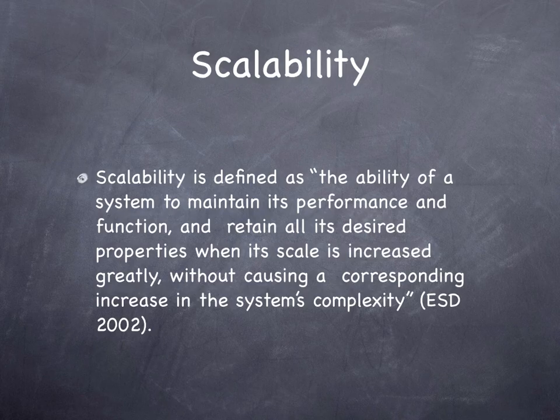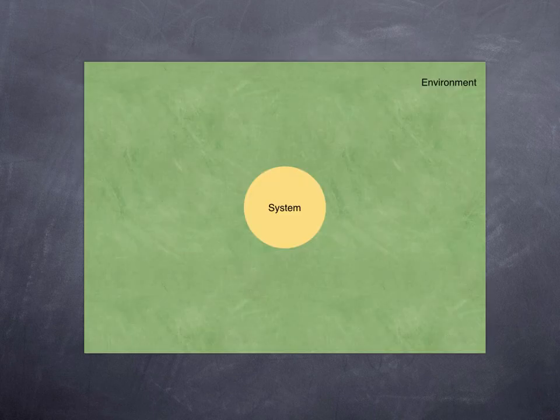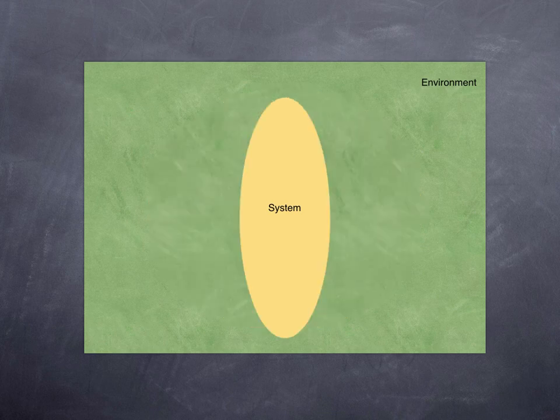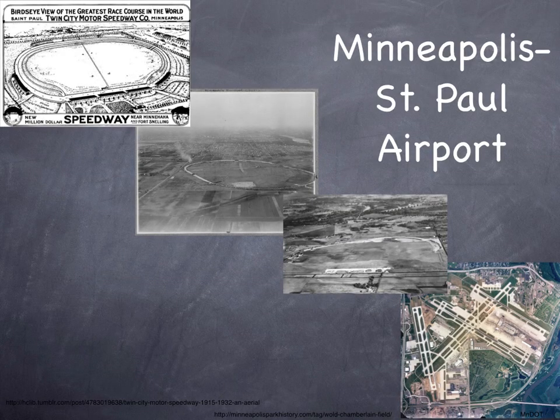Scalability is defined as the ability of a system to maintain its performance and function and retain all its desired properties when its scale is increased greatly without causing a corresponding increase in the system's complexity. Again, we see the system — the yellow circle — embedded in an environment, the green rectangle. The system may get larger or smaller over time, but it still functions as it grows and changes in shape. Minneapolis-St. Paul Airport was built on the site of a speedway and grew over time. We see the airport and site was scalable.